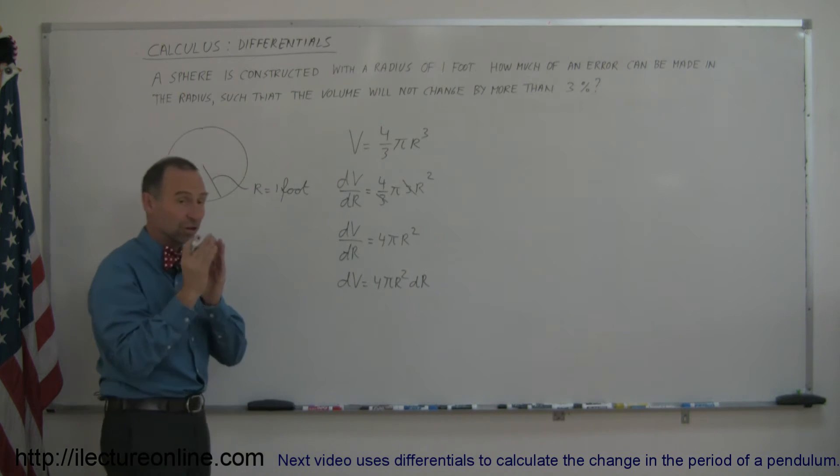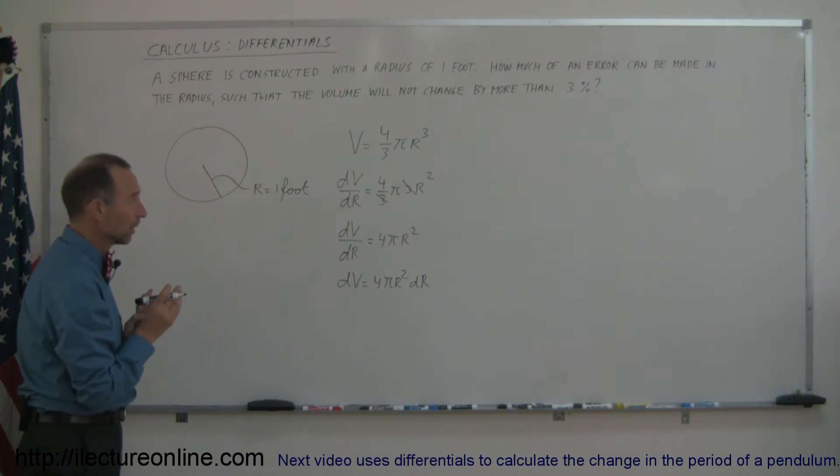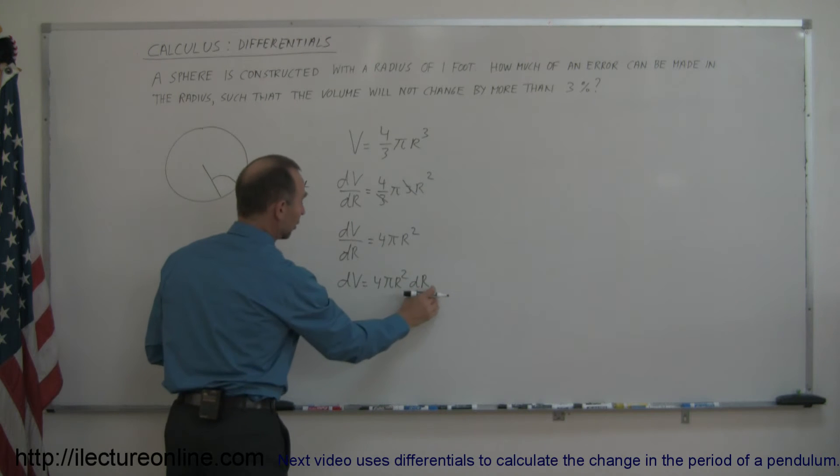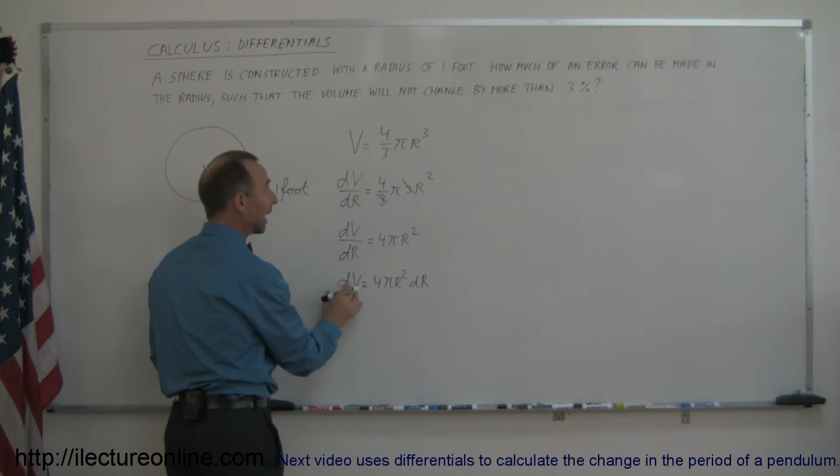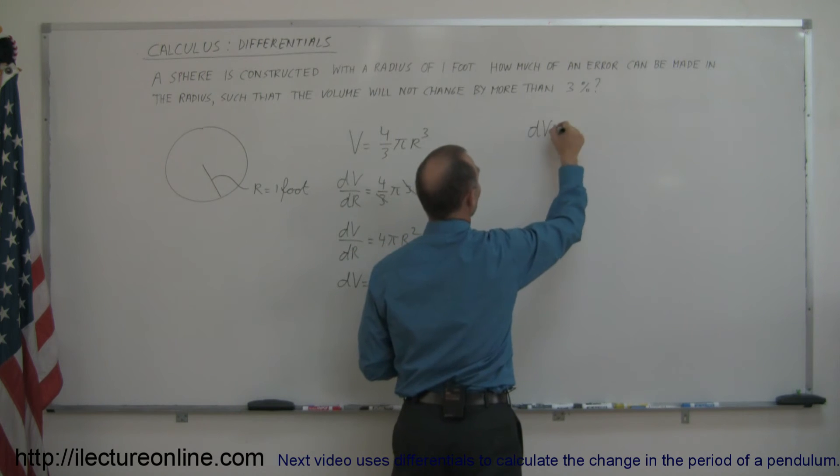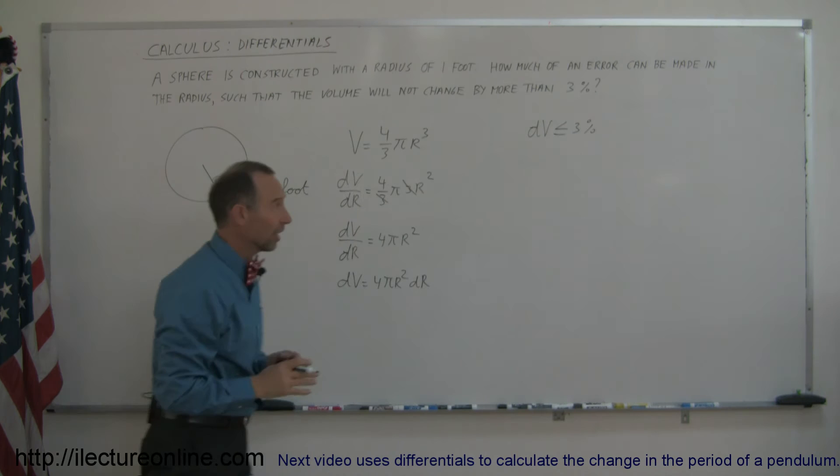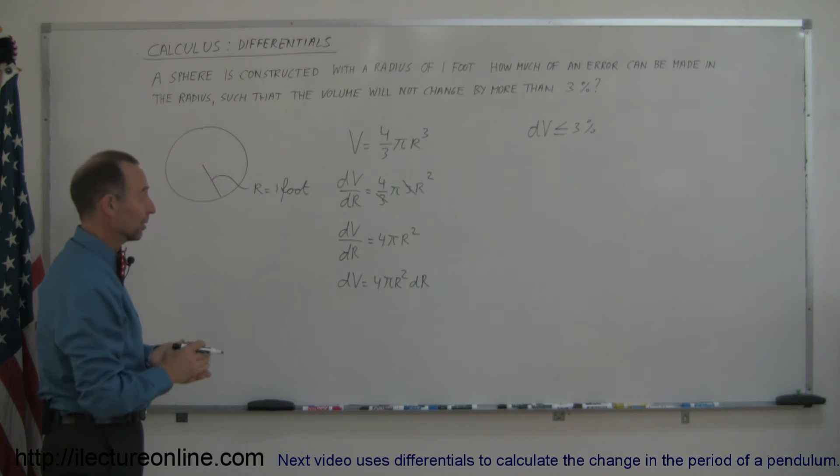Now dr stands for a small change in r and dv stands for a small change in the volume. So since we're looking for the allowable change in dr as long as dv is not any more than 3%, that means that dv must be less than or equal to 3%, so let's take the limiting value of 3% that will allow for the maximum error in r.